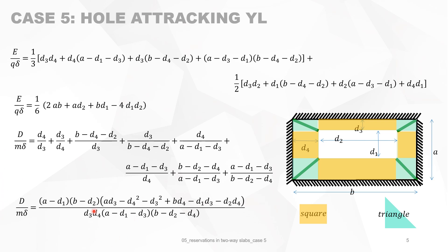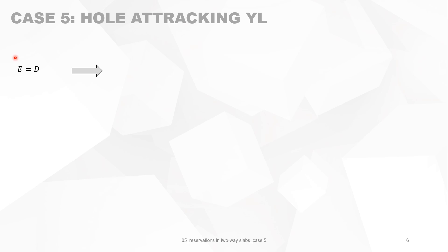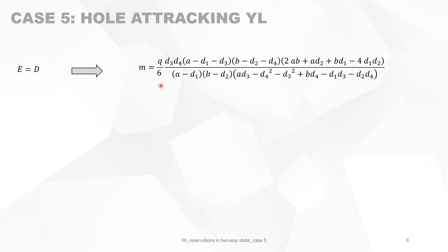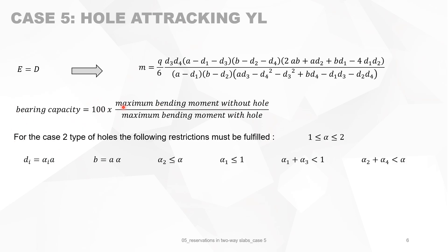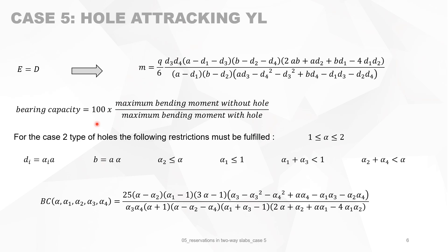You can try to simplify the expression. Setting E equal to D gives you the bending moment formula, which is getting a little complicated and not easy to handle. The maximum bearing capacity is defined as 100 times the maximum bending moment without the hole divided by the maximum bending moment with the hole. Using the dimensionless parameters for case 5 types of holes, you can rewrite and obtain a dimensionless formula for the bearing capacity.